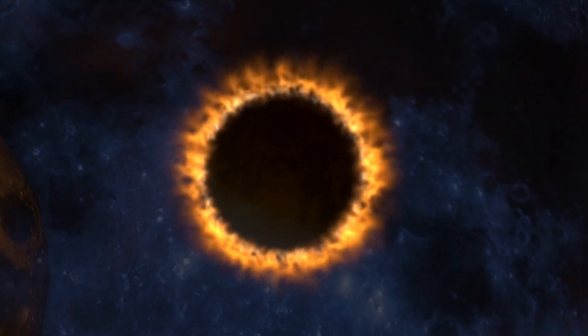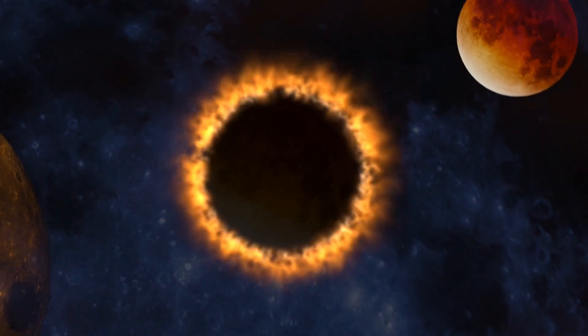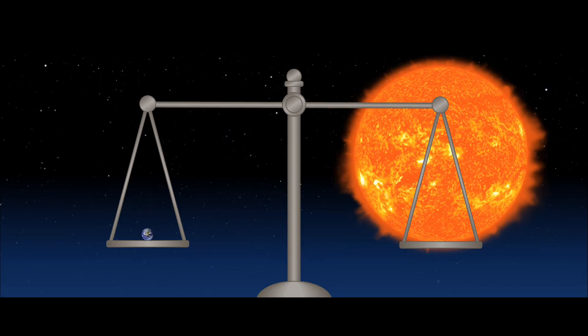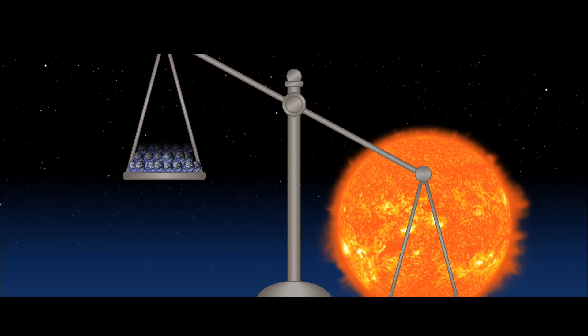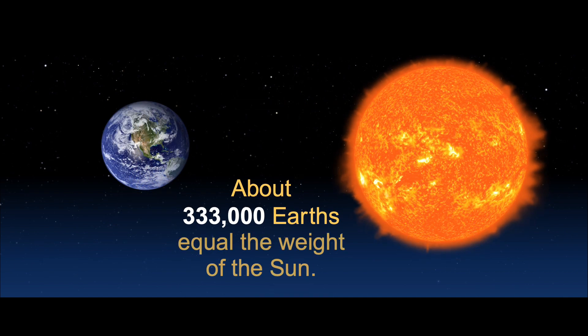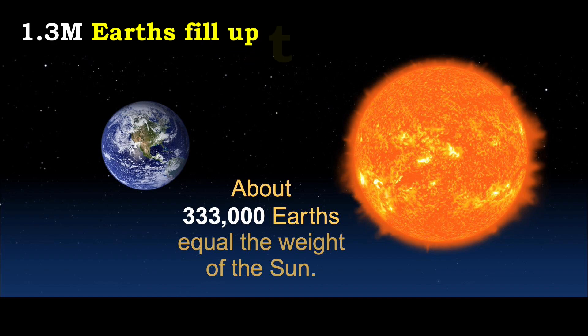That is over 28.2 million degrees Fahrenheit, and that is at the center. You would need 332,950 copies of Earth to match the mass of the sun and over 1.3 million Earths in order to fill the entire volume of the sun.